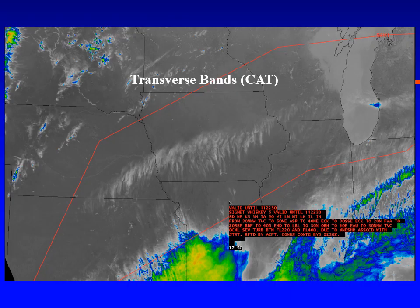Here's another satellite image showing clear air turbulence as indicated by transverse bands. The wave clouds set up perpendicular to the wind flow. In this case, the transverse bands stretch from near Omaha, Nebraska across Iowa and up into Wisconsin, with winds blowing from the southwest to the northeast. That area had a SIGMET out for severe turbulence at altitude from flight level 200 to 400. When you see transverse bands, that indicates clear air turbulence.